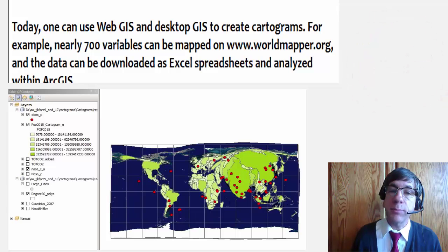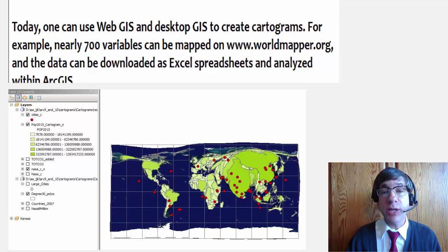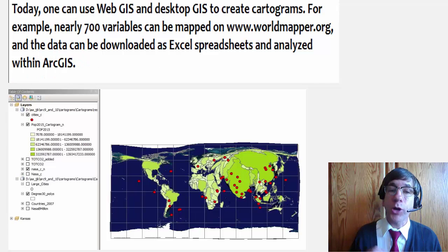For example, nearly 700 variables can be mapped on worldmapper.org and the data can be downloaded as Excel spreadsheets and analyzed within ArcGIS.